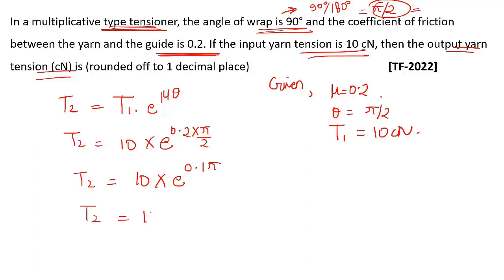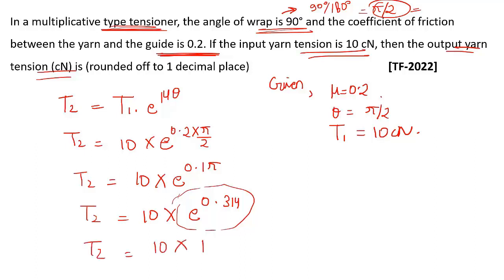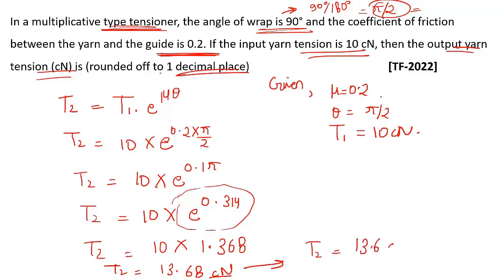Substituting π ≈ 3.14, the exponent becomes 0.1 × 3.14 = 0.314. So T2 = 10 × e^0.314 = 10 × 1.368 = 13.68 centi-newtons. Since the answer is asked to one decimal place, the correct answer is T2 = 13.6 centi-newtons.